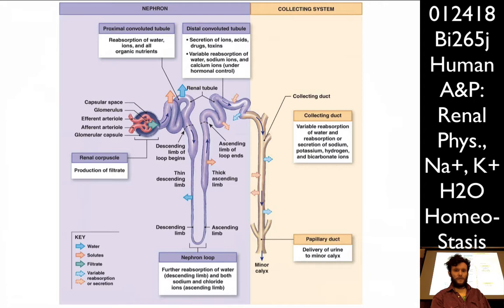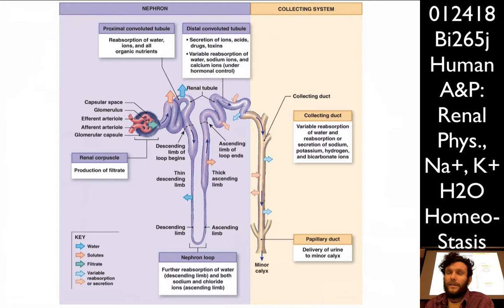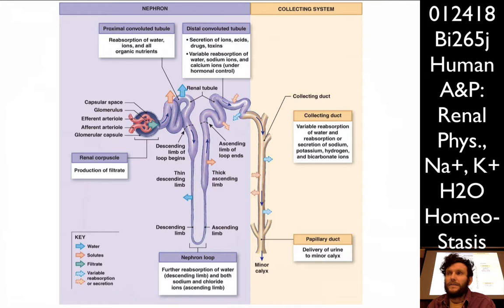Let's look a little bit closer at the nephron itself — this is the business end of a kidney. The function of the nephron is actually really sophisticated, and I'll give you a taste of it. The first part is the renal corpuscle, where we produce what's called filtrate. Blood comes in through the afferent arteriole, passes through the knot of capillaries called the glomerulus, and then passes out through the efferent arteriole.